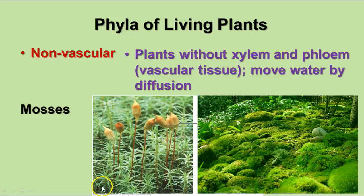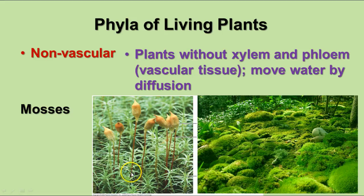The most recognizable form is the green part, which is the gametophyte, and it's haploid because it's a gametophyte. There's a male gametophyte and a female gametophyte, and they depend on water to move the sperm cells into the female gametophyte to fertilize the egg. The stalk with the cap on top is the sporophyte that grows out of the top of the plant.